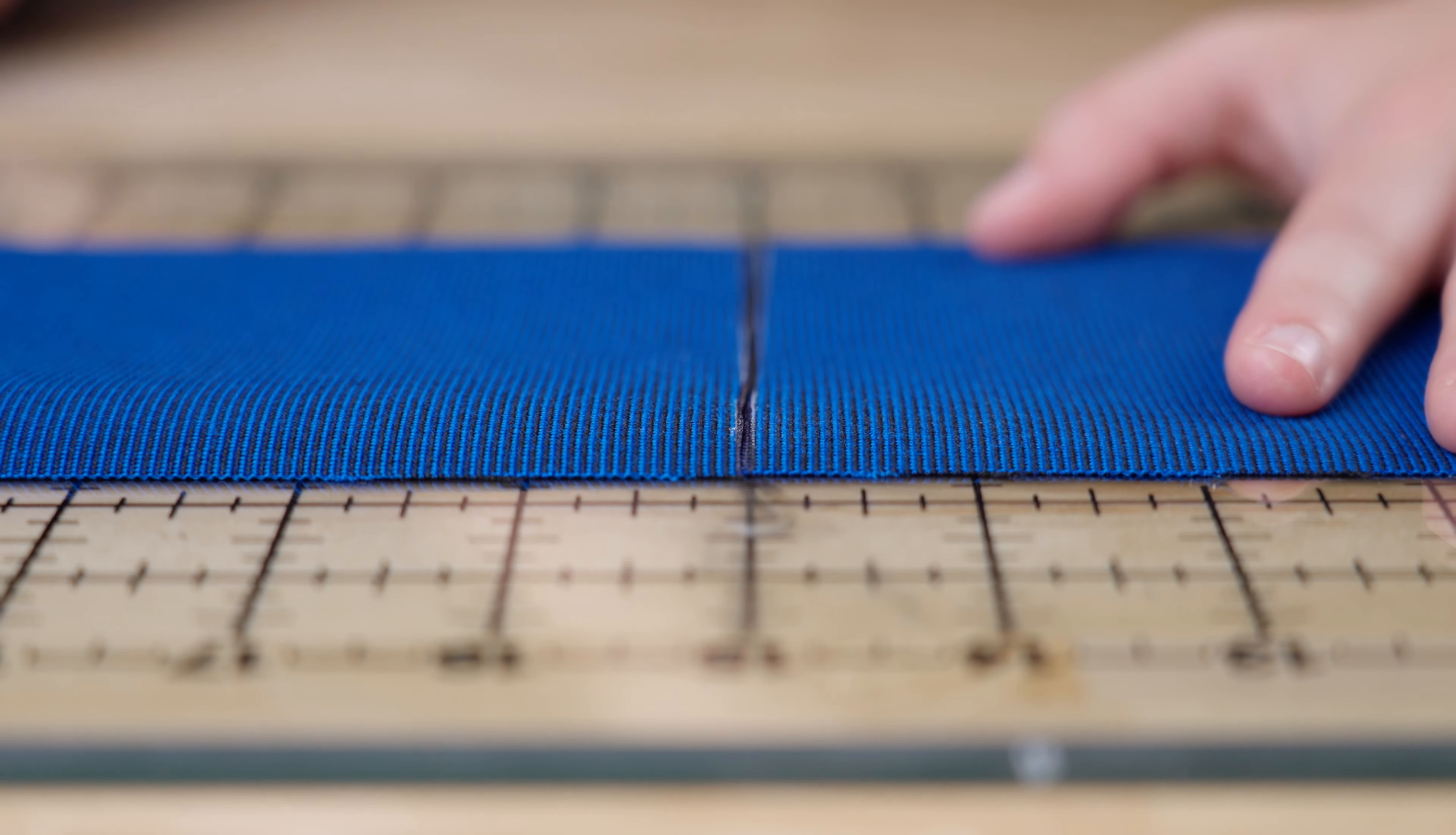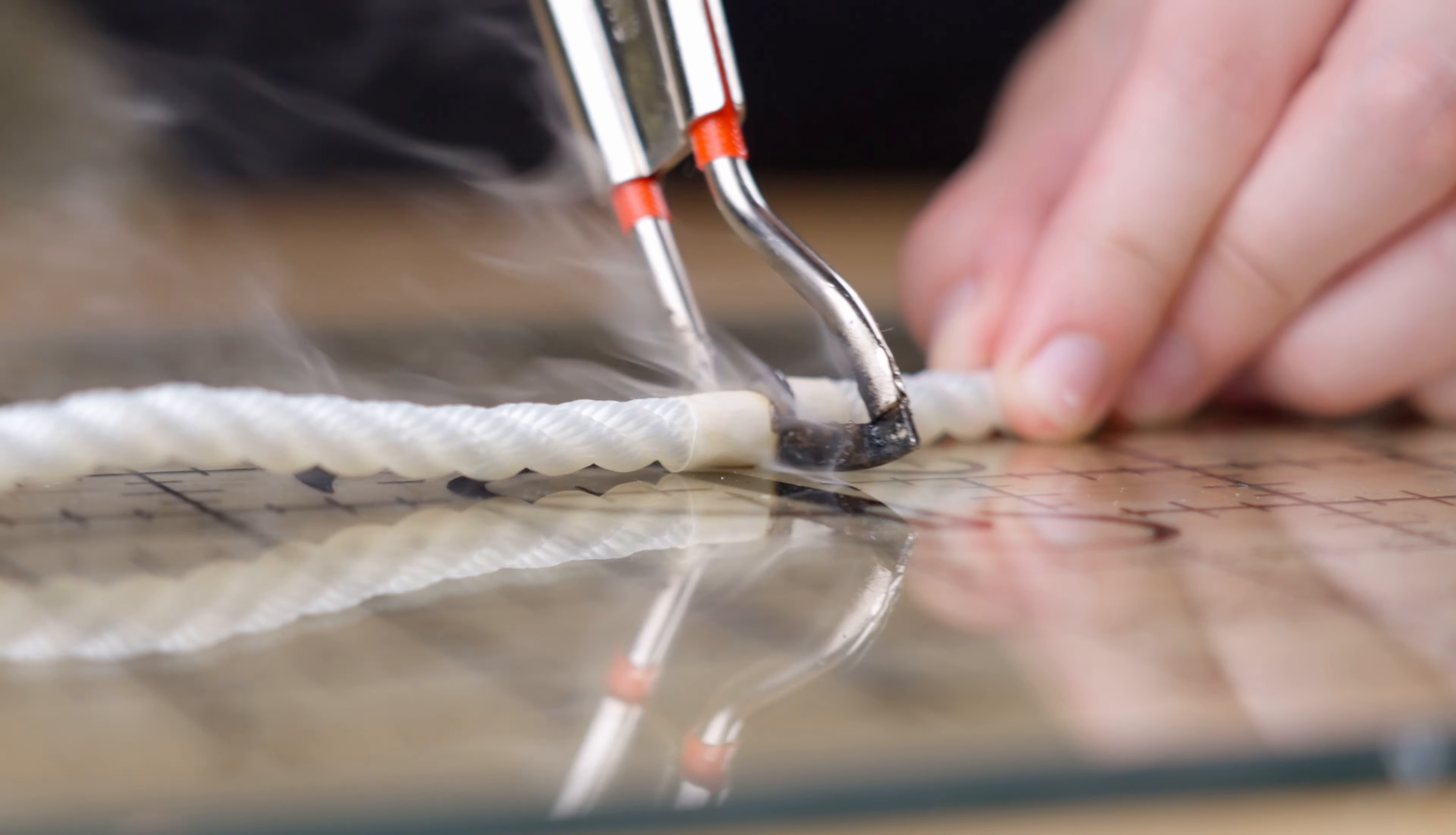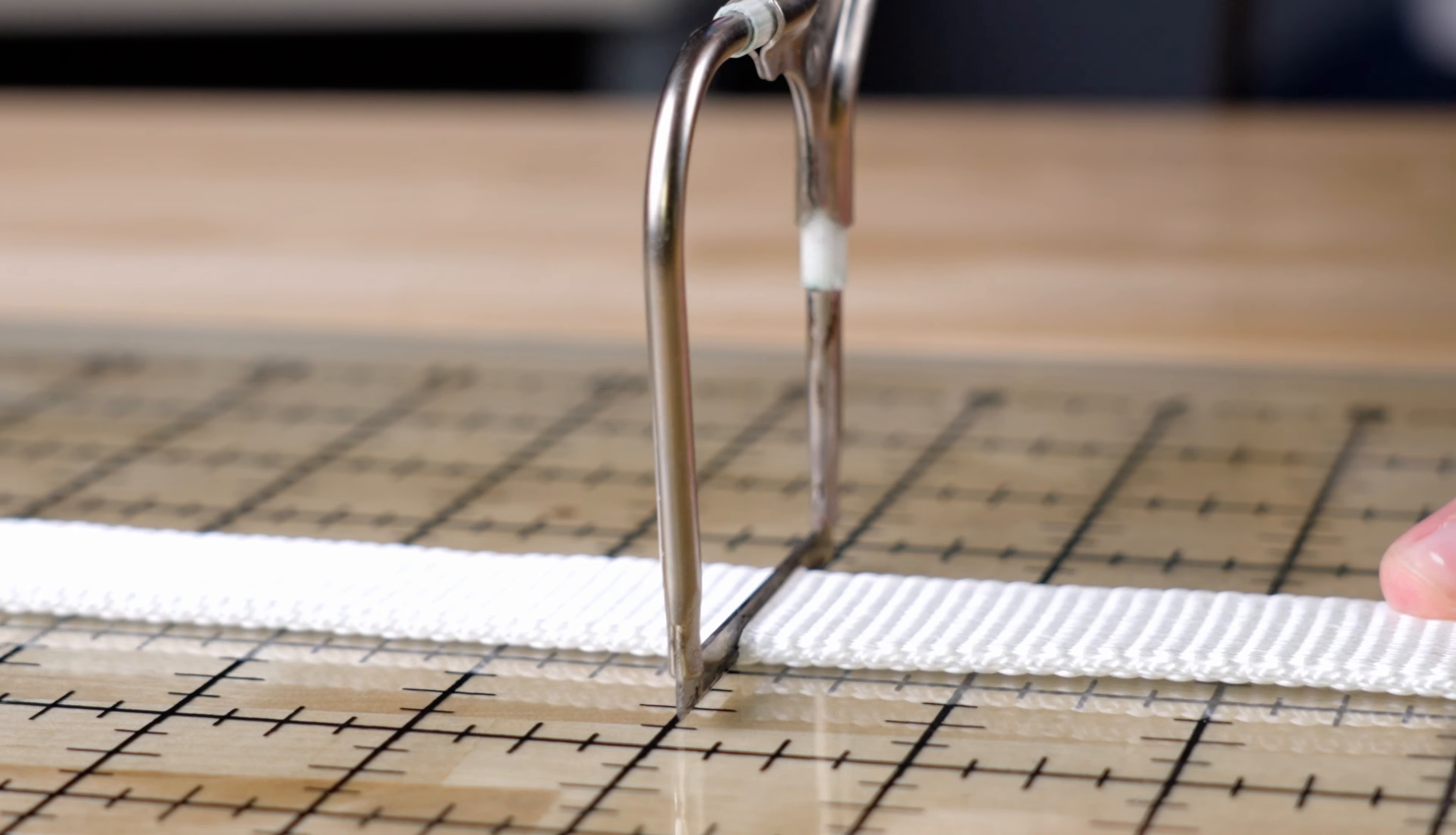A great companion to our hot knife is the Sailrite Tempered Cutting Glass. This tempered glass provides a safe work surface for the hot knife to glide across when cutting fabric, rope, and webbing as well as other large applications.